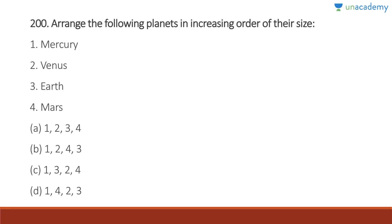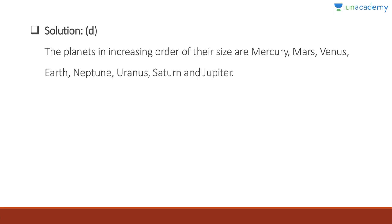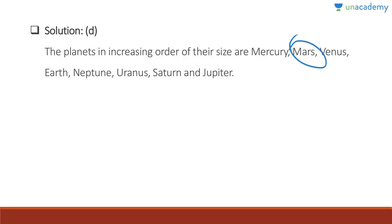Question 200: Arrange the following planets in increasing order of their size. Mercury is the smallest, then Mars, then Venus, then Earth. Answer is one, four, two, three. The gas giants are all larger: Neptune fifth, then Uranus, then Saturn, then Jupiter (the largest). So the full order from smallest to largest is: Mercury, Mars, Venus, Earth, Neptune, Uranus, Saturn, Jupiter.